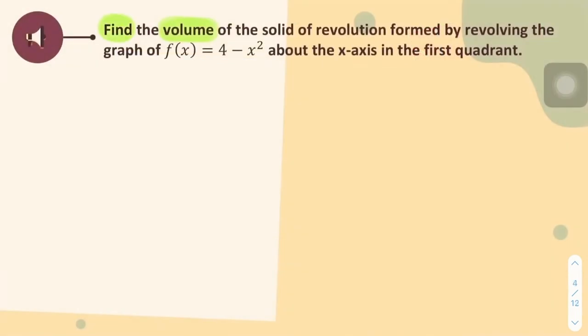Secondly, we need the pi and also the square in order to find the volume of a region. Let's do the first question. Find the volume revolving the graph about the x-axis. Step 1: Sketch the graph.